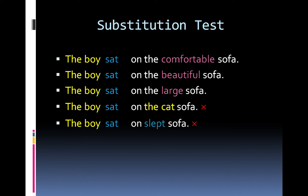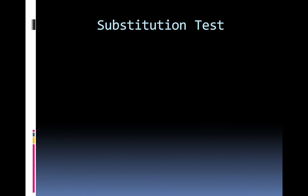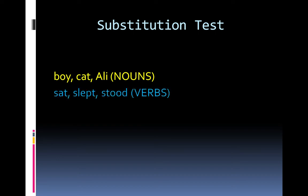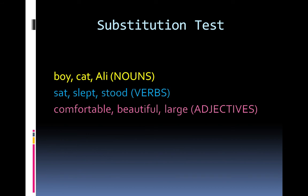Now let's see how the example words can be grouped. We can divide these words into three distinct groups according to their meaning and function. The first group — 'boy,' 'cat,' and 'Ali' — are the names of persons and things, so we call them nouns. The next group — 'sat,' 'slept,' and 'stood' — we call verbs because they indicate the action performed by the subject. And the last group — 'comfortable,' 'beautiful,' and 'large' — are called adjectives because they tell us the quality of a noun.